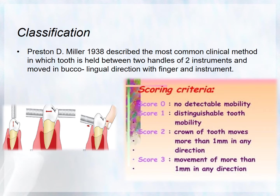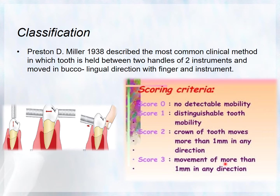Coming to the classification of tooth mobility, the most recognized classification is by Miller in 1938. He described a clinical method in which the tooth is held between two instrument handles and moved in the buccolingual direction. The mobility is scored as: Score 0 — no detectable mobility; Score 1 — distinguishable tooth mobility; Score 2 — crown of tooth moves more than 1 mm in any direction, horizontally or vertically.